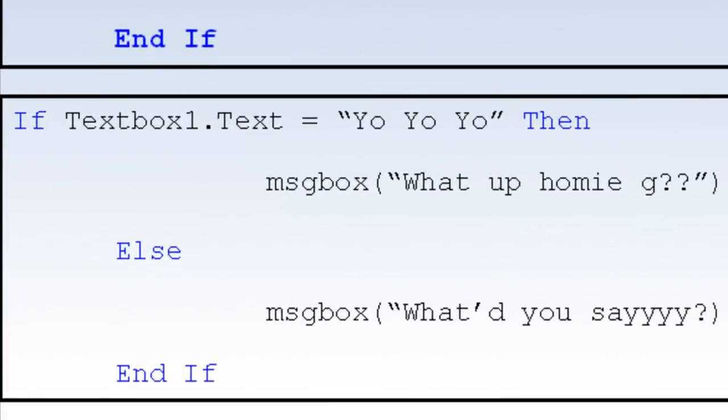So here's a good example of how this might work. Let's say you have a text box, and if you say if textbox1.text is equal to yo yo yo, then a message box will come up that'll say, what up, homie G? But else, if it doesn't say yo yo yo, then a message box will come up saying, what'd you say? Because it doesn't understand what you said.